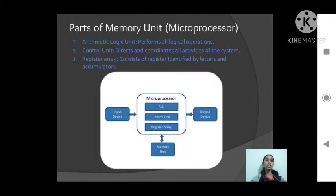What are the parts of a microprocessor? The first is the arithmetic logic unit which performs all logical operations. The second is the control unit which directs and coordinates all activities of the system. The third is the register array which consists of registers identified by letters and accumulators.